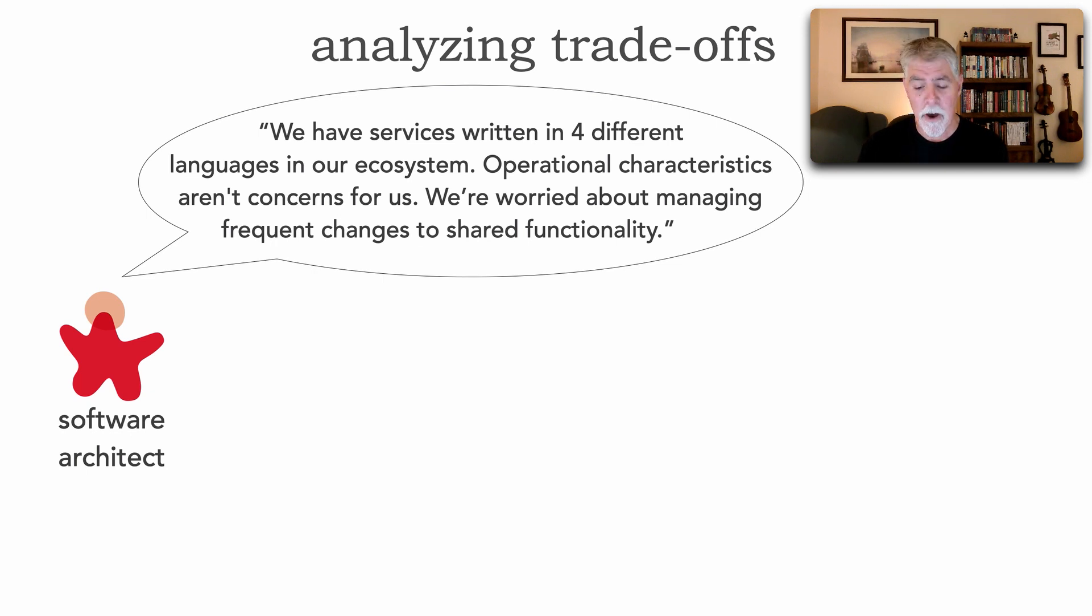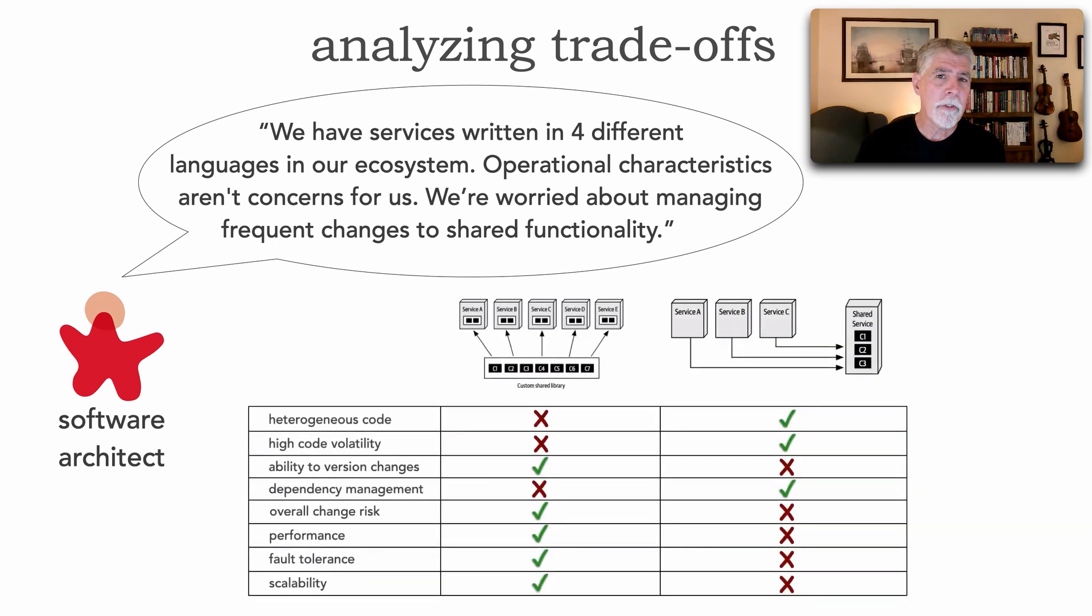That's our context. And if we go to our scorecard we look at specifically what criteria is based on our specific context. And we find in fact it's heterogeneous code, high code volatility, and that management of dependencies for that shared functionality. And it turns out 3 against 0. So it turns out shared service would be the better choice for us.